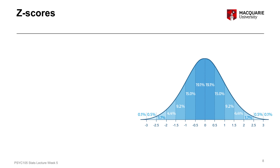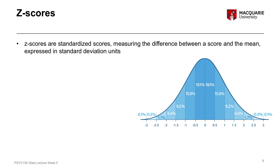Expressing any particular score in a standardized way is called calculating a Z score. A Z score is a way of expressing a particular score in a standardized unit of measurement. Z scores are standardized scores, and what they represent is the difference between a particular score and the mean score on that variable, expressed in standard deviation units. Calculating a Z score is essentially what I just did — saying that Joe's IQ was one standard deviation above the mean. Z scores can be either positive or negative. A Z score of 0 means that person is exactly on the mean.